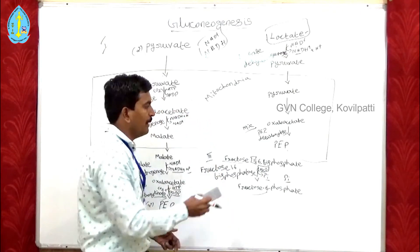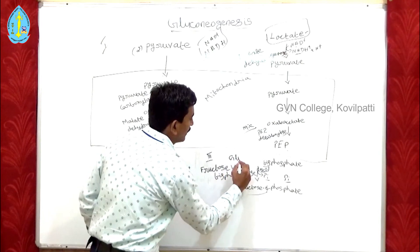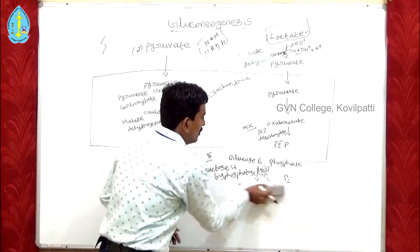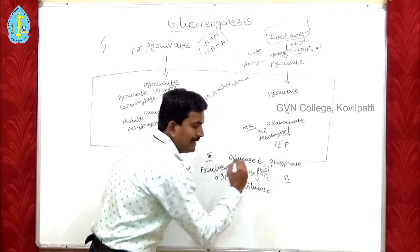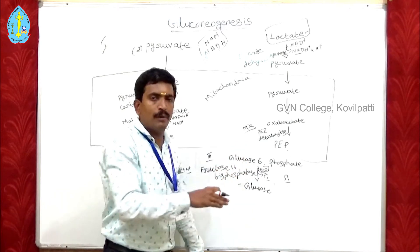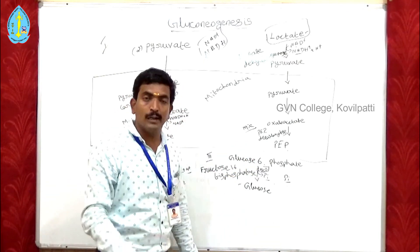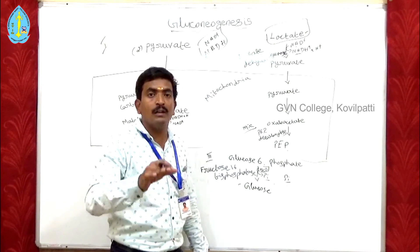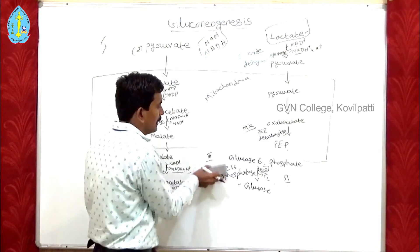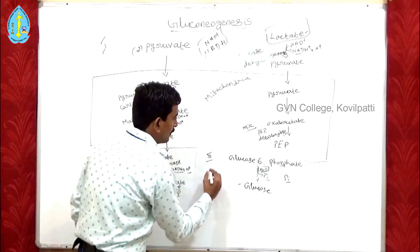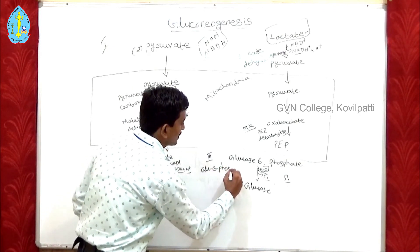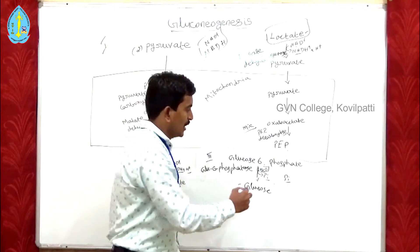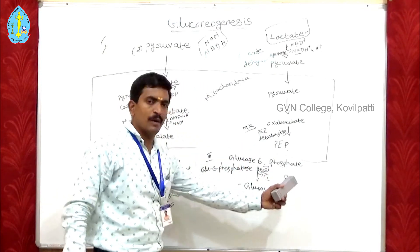The third bypass reaction is the conversion of glucose 6-phosphate into glucose. In glycolysis, glucose is converted into glucose 6-phosphate by hexokinase, which is an irreversible enzyme. Kinase-enzyme-involved reactions are irreversible. Here, the enzyme glucose 6-phosphatase performs the reverse: a water molecule is added and inorganic phosphate is removed from glucose 6-phosphate, releasing free glucose. The remaining steps of gluconeogenesis are the same as in glycolysis.